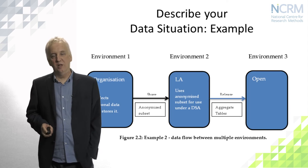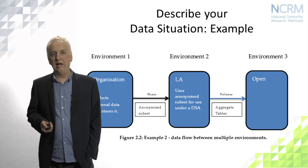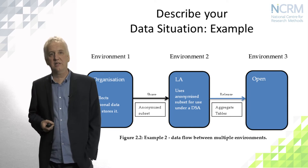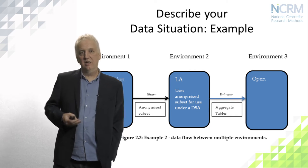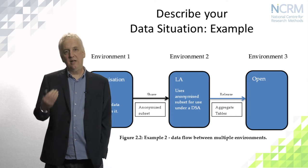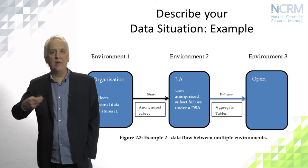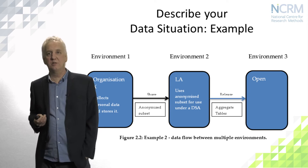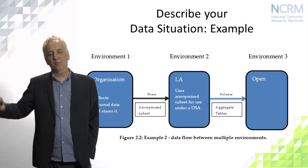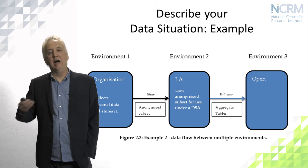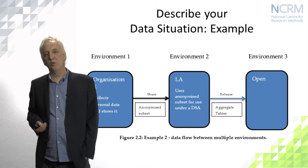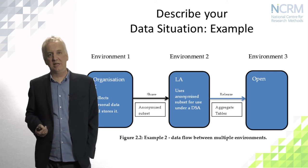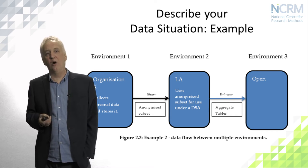Here's an example. We have a data situation where we're moving data into three environments. We might imagine an organisation collecting data, passing it to a local authority as part of some legal process, and the local authority wanting to release some aggregates from that data as open data. Each of those data processes and each of those environments will have their own risks as the data moves through them. You need to understand your particular situation, and a flow diagram often helps with that.